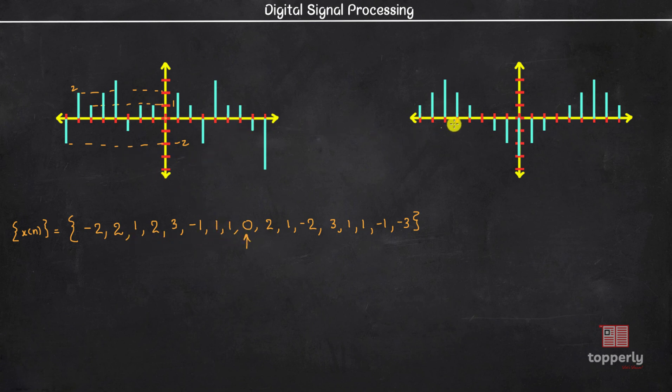Now let us do the same for this discrete signal. Here we have x2 of n equal to 1, 2, 3, 2, 1, 0, minus 1, minus 2, minus 3, minus 2, minus 1, 0, 1, 2, 3, 2, 1. And as you can see x of 0 corresponds to minus 3, so let us put an arrow mark here.